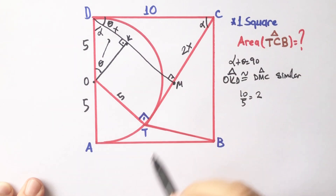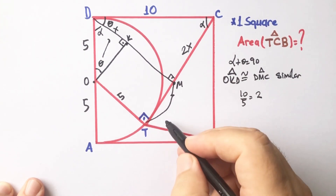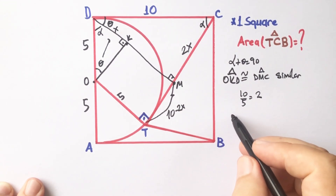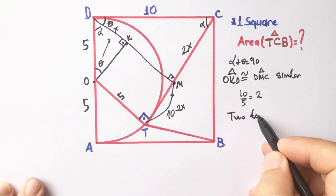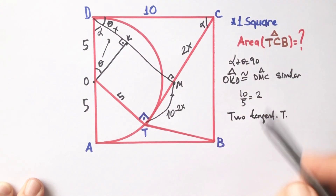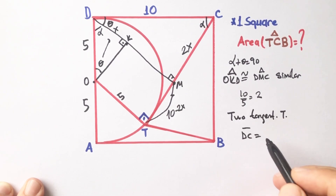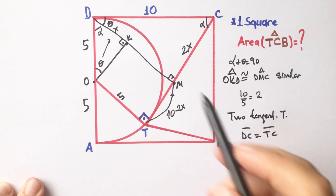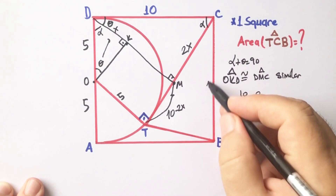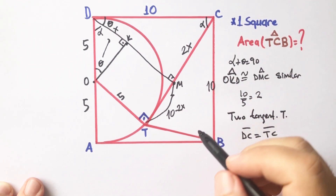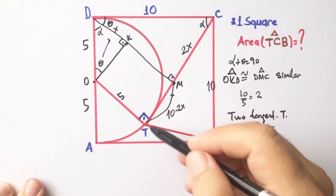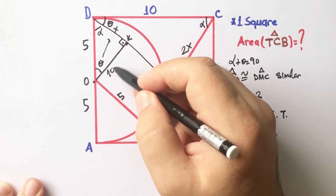Therefore, if this side is 2x, this length must be 10 minus 2x. This is because, according to the two-tangent theorem, the length of DC must equal the length of TC. Therefore, if here is 10 units, this length is 10, and this length is also 10 units. So if here is 2x, this length must equal 10 minus 2x, and this length is also 10 minus 2x.